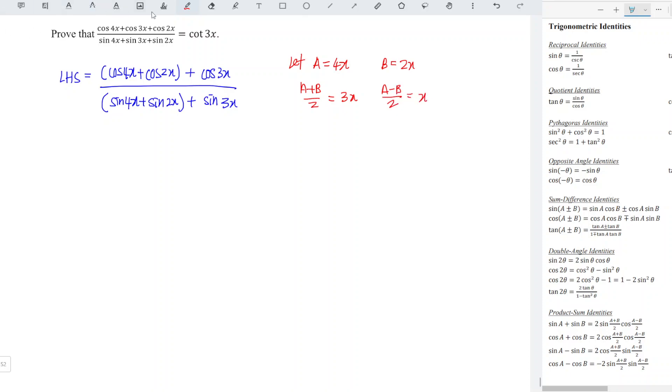And I'm going to apply the product sum identity. This one for the denominator and this one for the numerator. So we replace this identity in the left hand side. So we should obtain 2 cos 3x cos x plus the remaining part cos 3x over 2 sine 3x cos x plus the remaining part sine 3x.